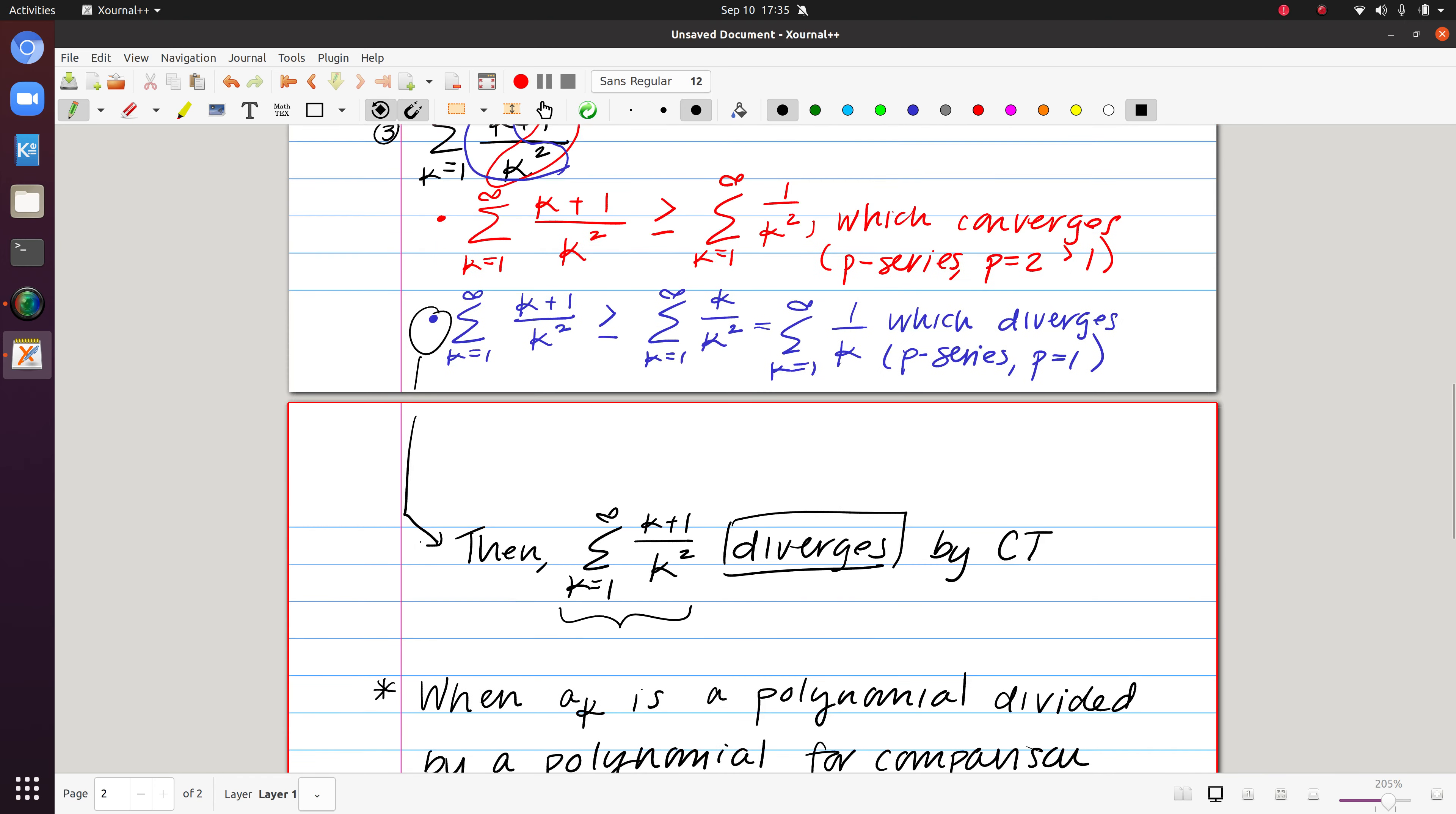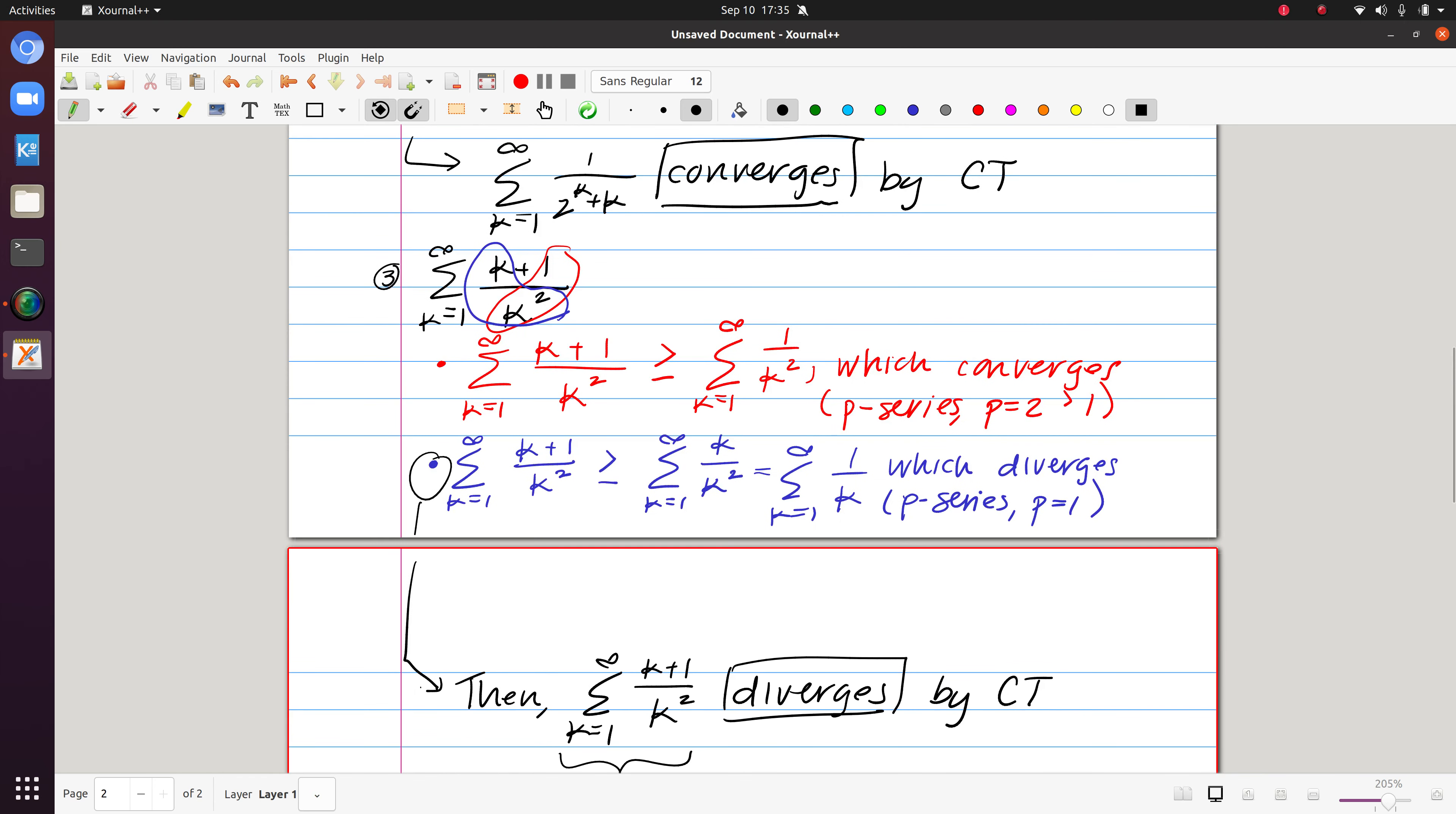So what I mean there, if we look back at this example, of course there was only one choice in the bottom, k squared, but in the top I had k or I had 1.